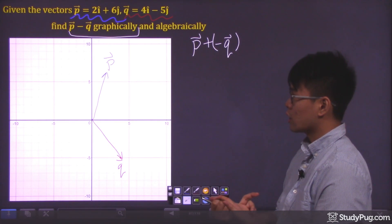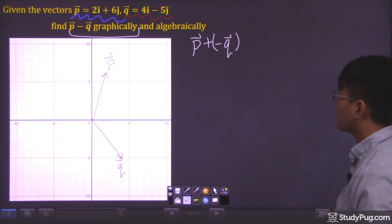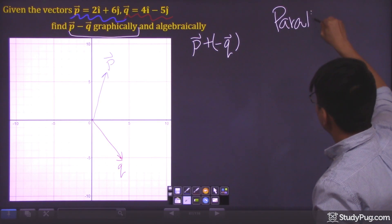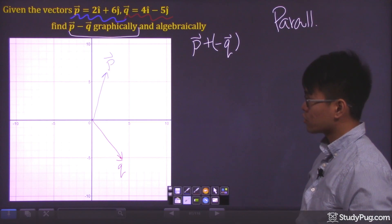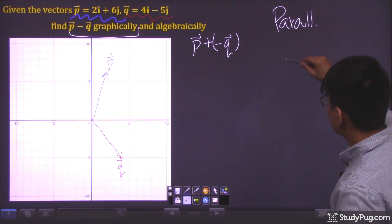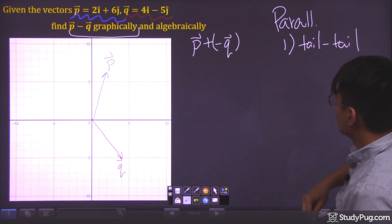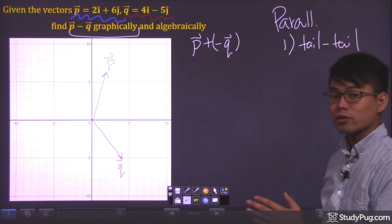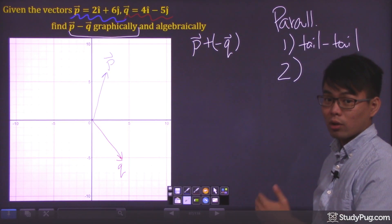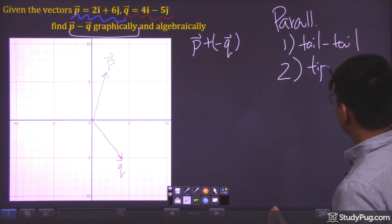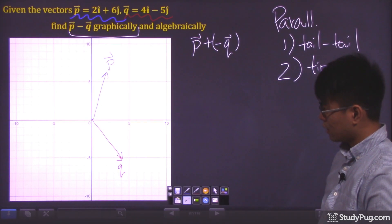Since we have used the tip-to-tail method for previous questions, let's use the parallelogram method this time. The parallelogram method requires us to have the tails of the two vectors connected first, then shift the two vectors across to form a parallelogram so that the tips are also connected.